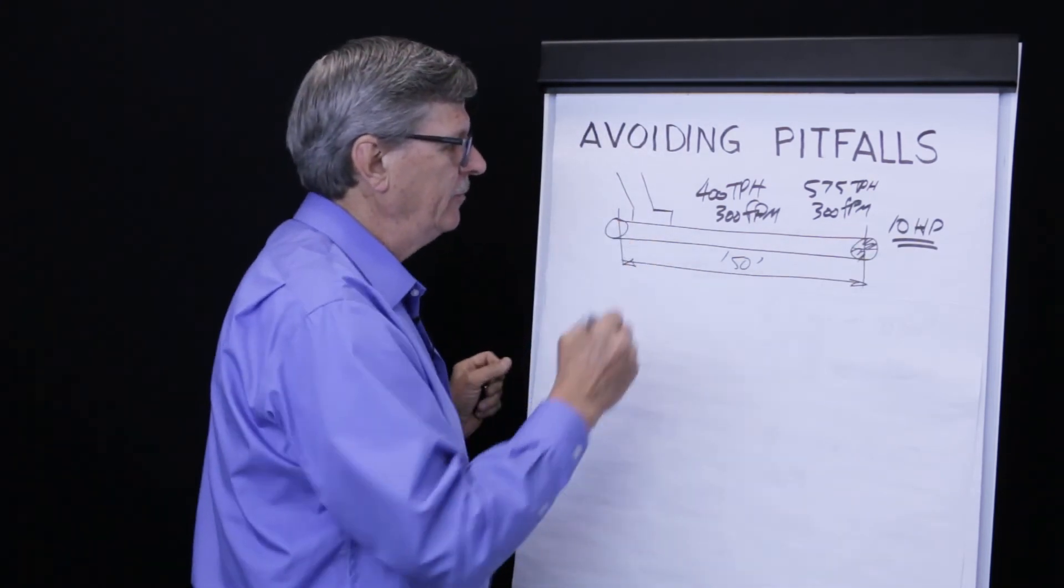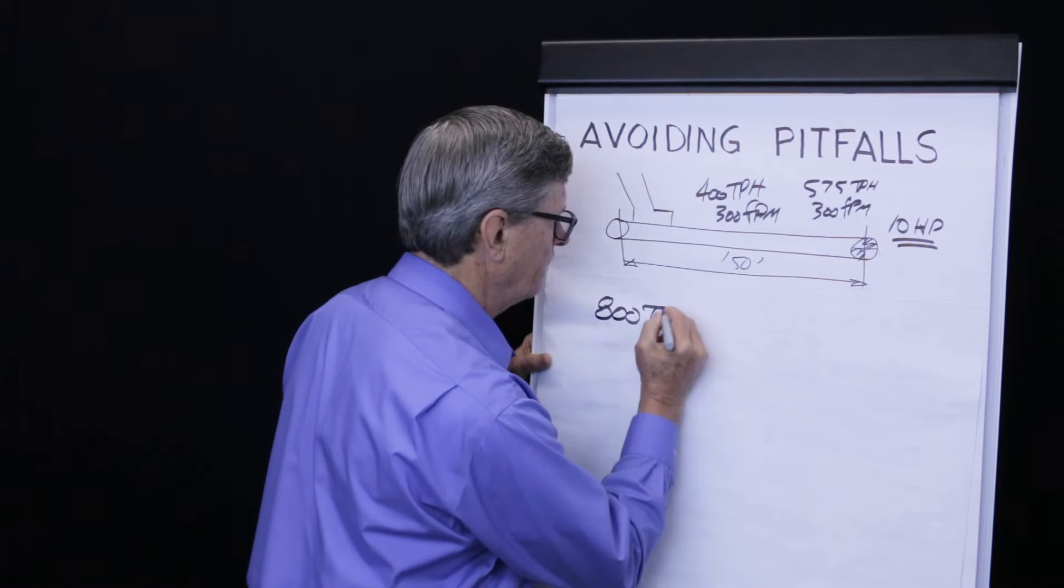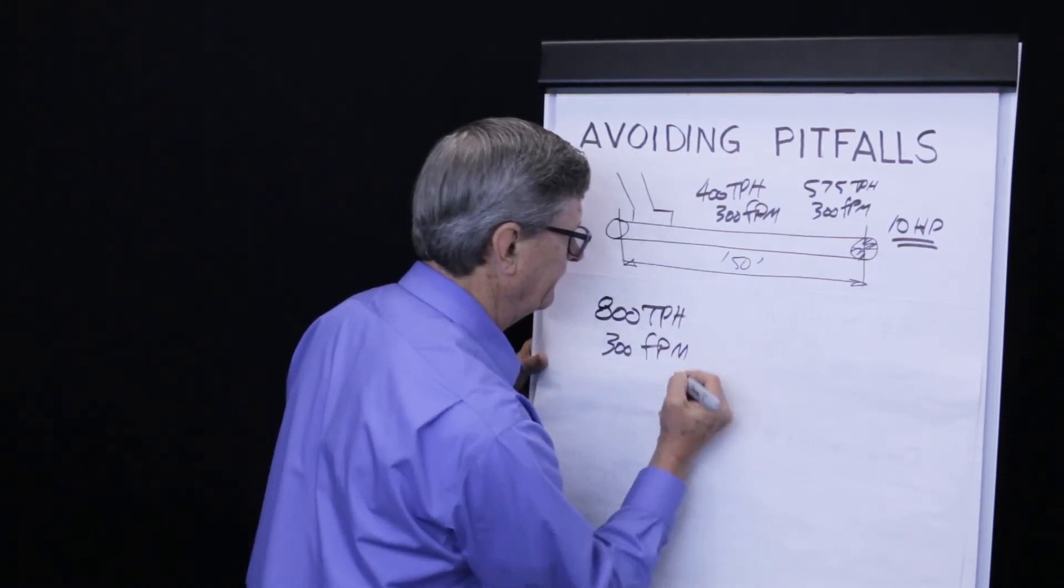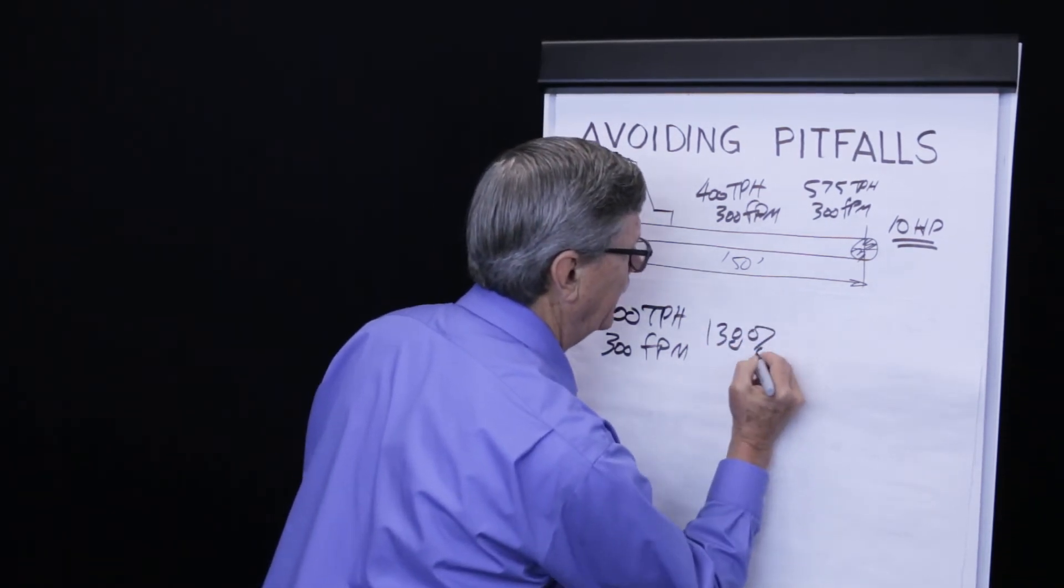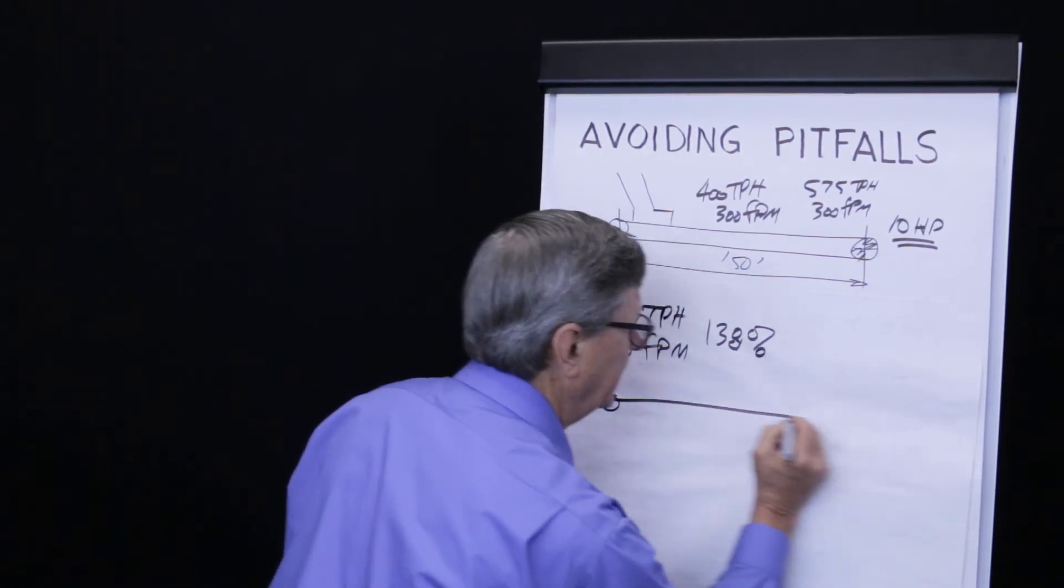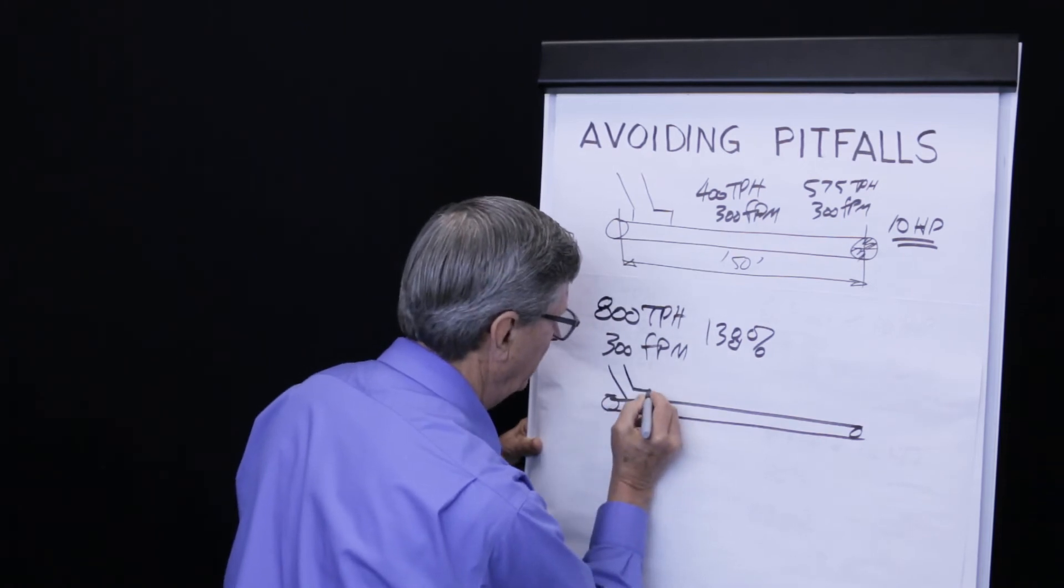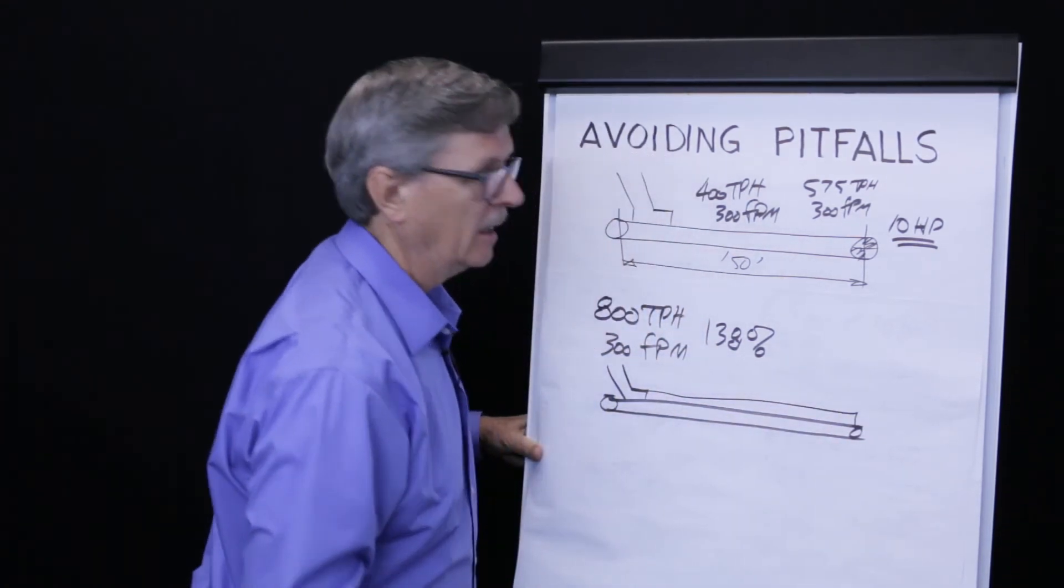We know that we could move the rate up to 575 tons per hour at 300 feet per minute without revising the drive. If, on the other hand, we now have to handle 800 tons per hour, if we want to maintain the belt speed at 300 feet per minute and we are at 138% of the CEMA recommended cross section, one idea might be to fully skirt the conveyor. Rather than having a 12 foot skirt zone, let's make a 150 foot long skirt.